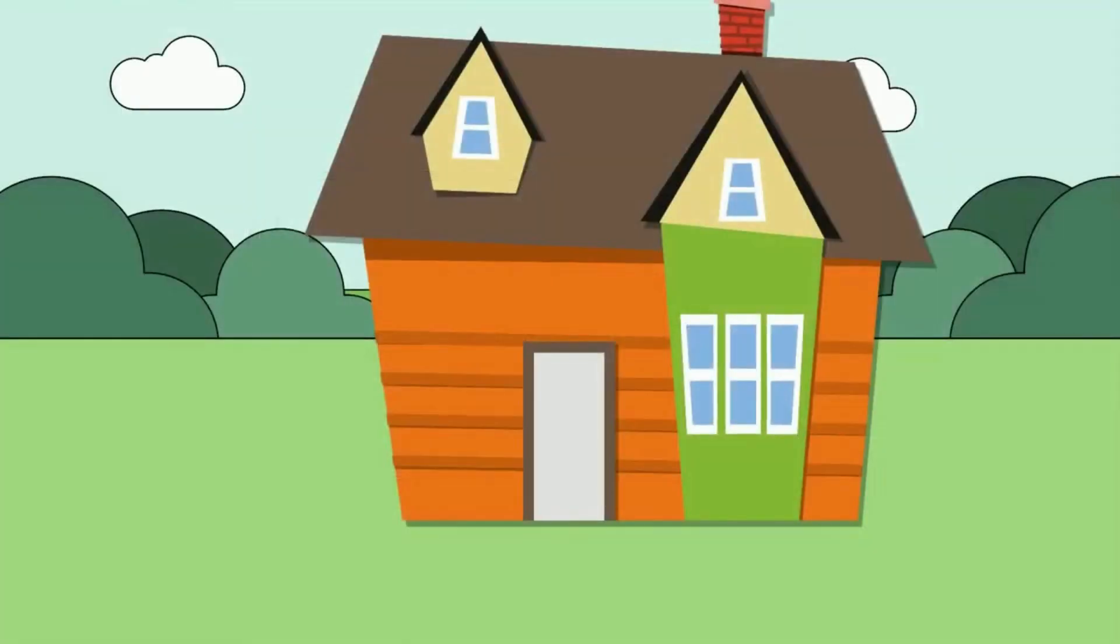Let's take a look at this house. Do you see any trapezoids? Yes, the roof is. Is this geometric shape right here a trapezoid? No, because it does not have one pair of parallel sides.